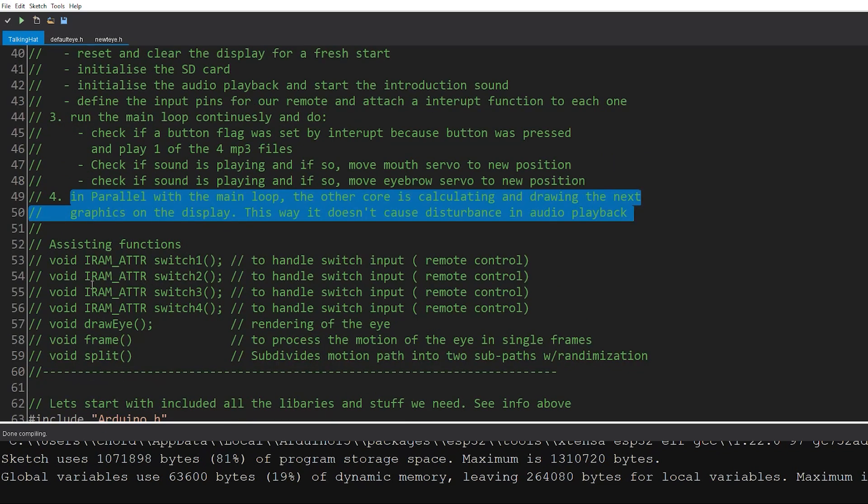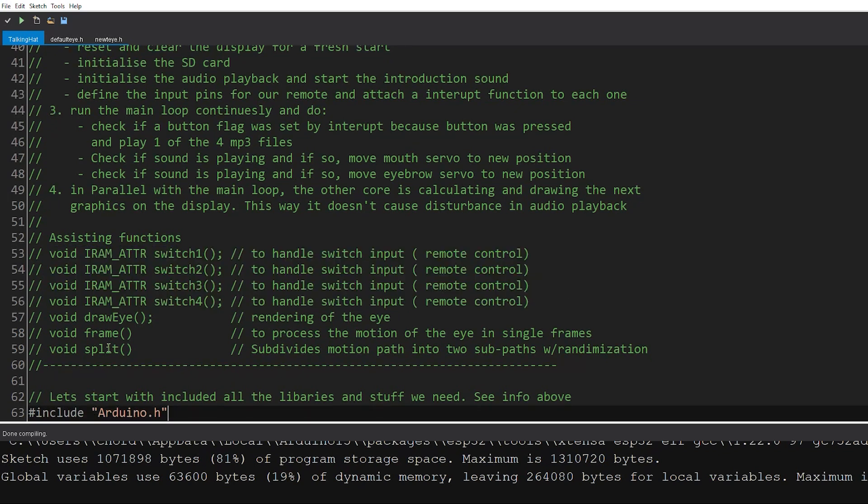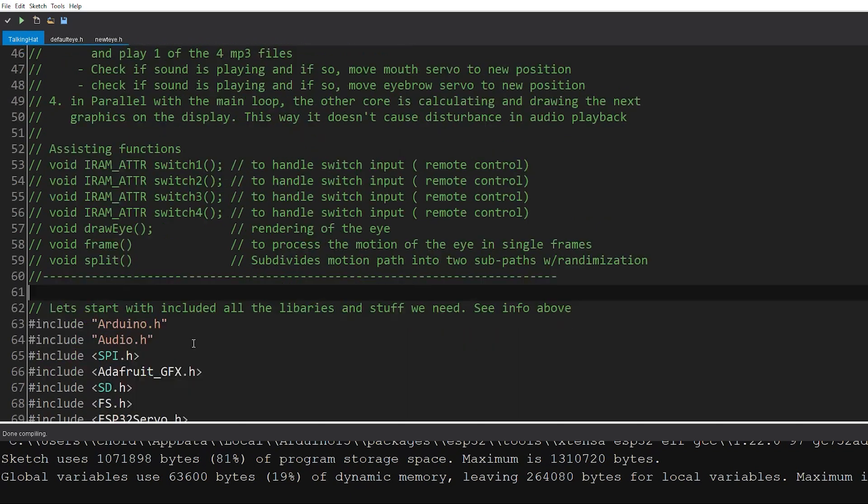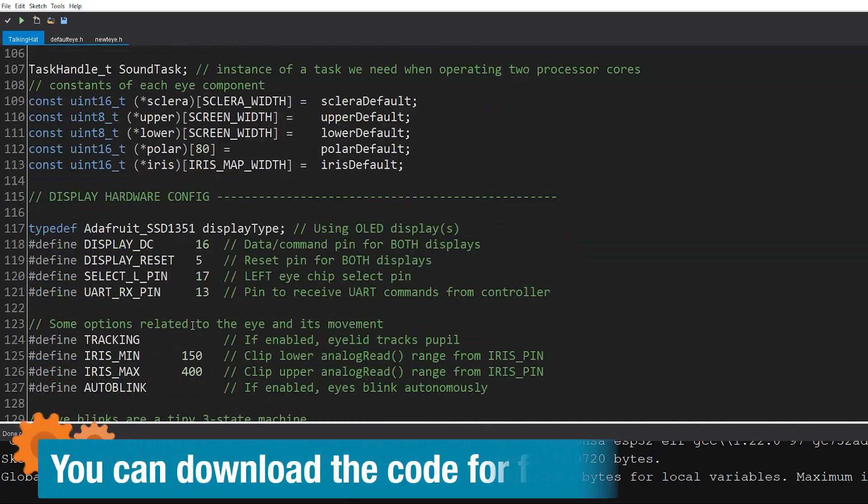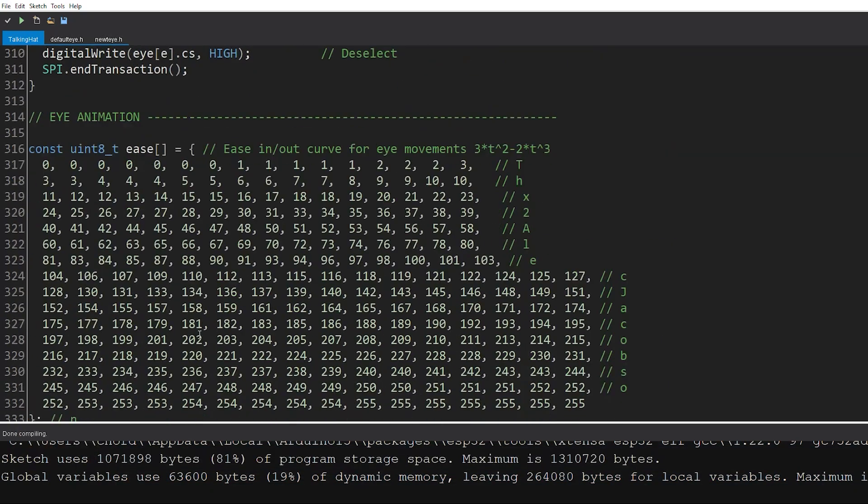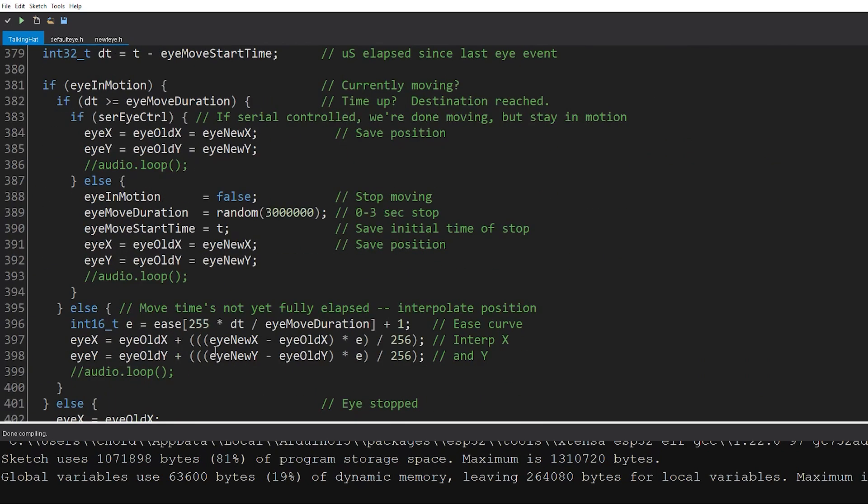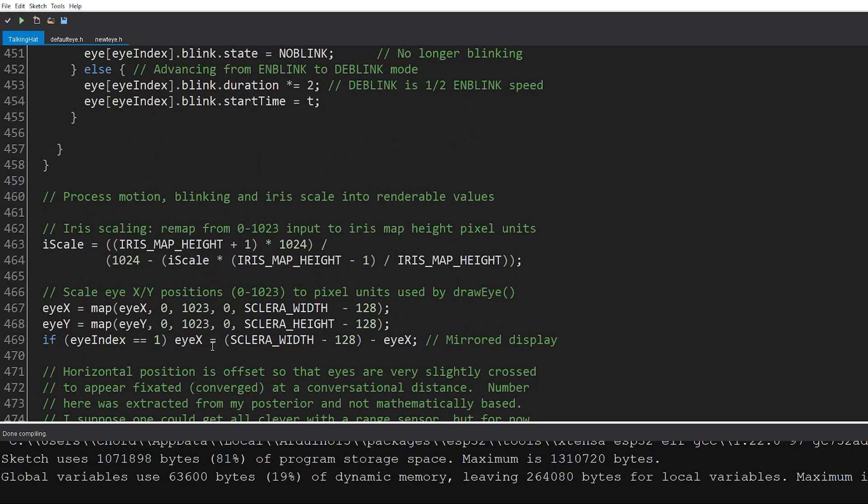And we have a few assisting functions. Basically, we have the interrupt functions for the switches. The switches are replaced by remote control also. And then we have a few functions for the eye. First, we have the drawing of the eye. Frame processing because the movement of the eye is done frame by frame. Another supporting function is called split. So that's basically it. I can scroll you all down to it, but it doesn't really matter. It's a lot of code. Of course, take your time to go through it. Comments are there. And if you have any questions, feel free to ask me. You can drop a note in the community and I'll do my best to answer your questions as always.